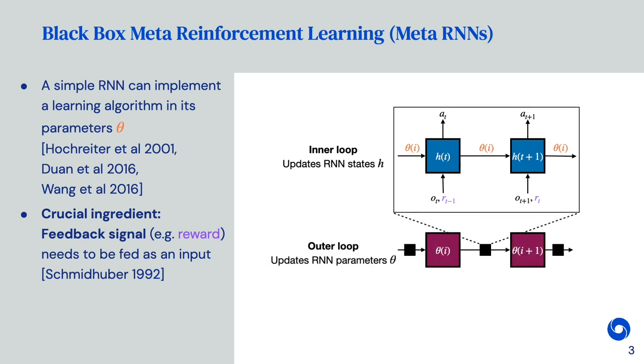During meta-training, we would then update these RNN parameters to maximize the return. Meta-testing holds the parameters as fixed and purely unrolls the RNN forward. This gives us a simple framework to measure new learning algorithms. Unfortunately, generalization to significantly different tasks and environments is difficult.